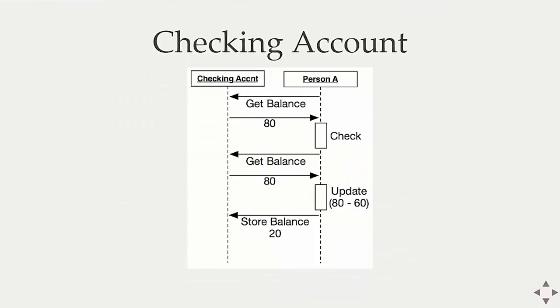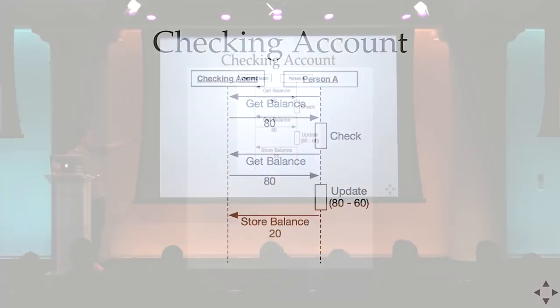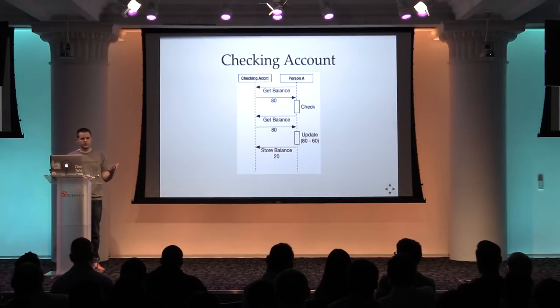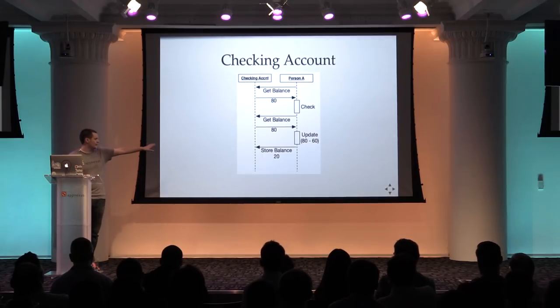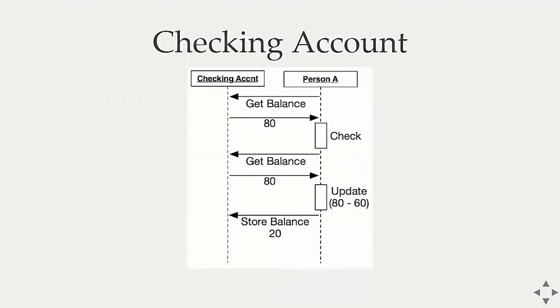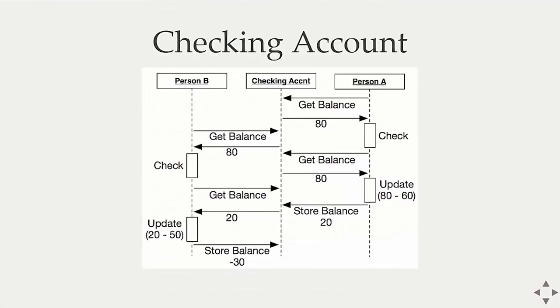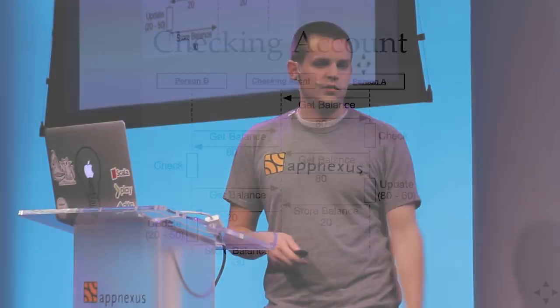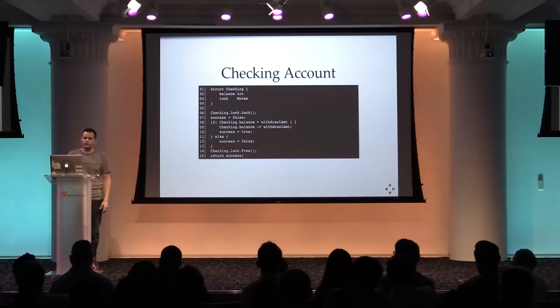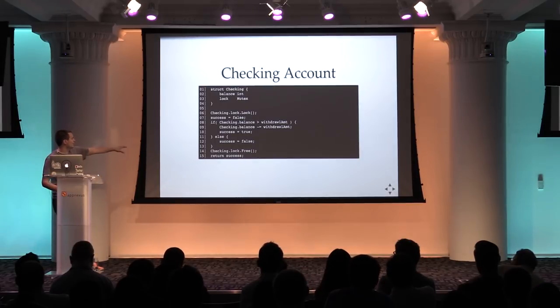In a single-threaded approach, person A gets the balance ($80), performs the check, and if they have enough money, gets the balance, updates it, and stores it back. Once you introduce another person concurrently, both person A and B retrieve the balance and get back $80 at the exact same time. They both pass the if condition and both attempt to update the balance simultaneously. Person A wins and updates first, but person B has already done the check and performs another update — we end up storing a negative balance, an invalid state.